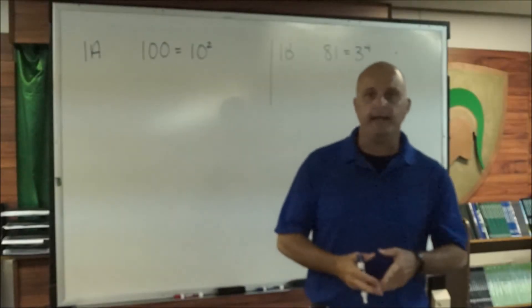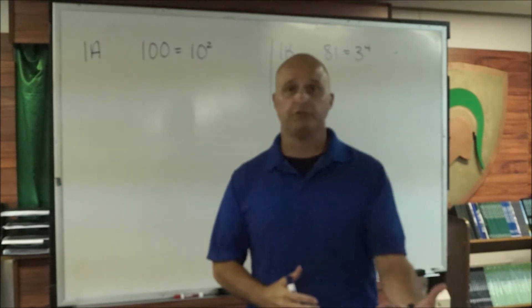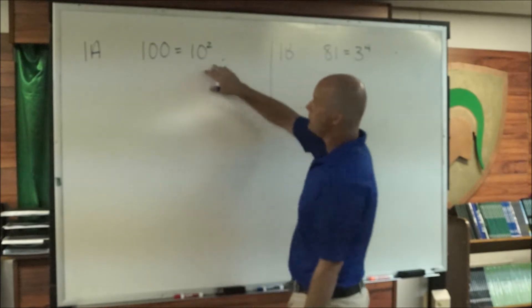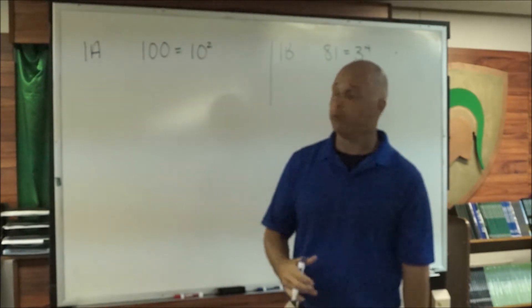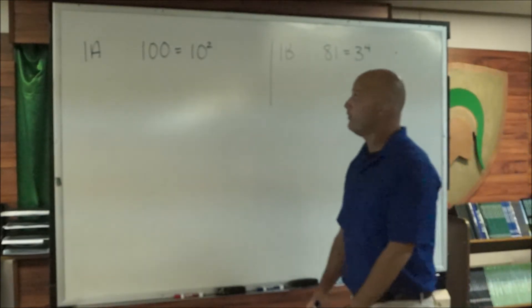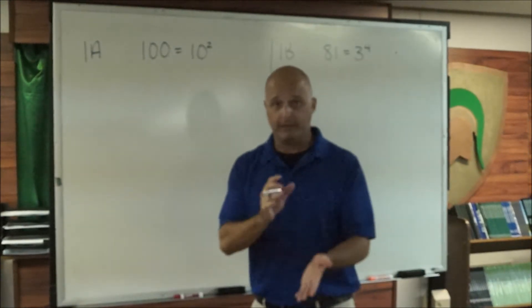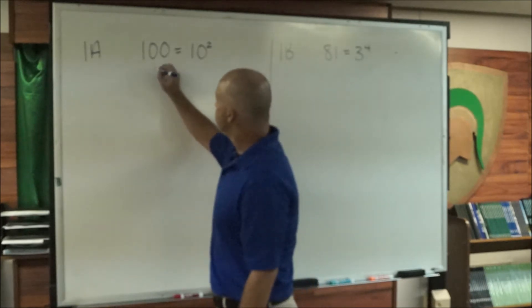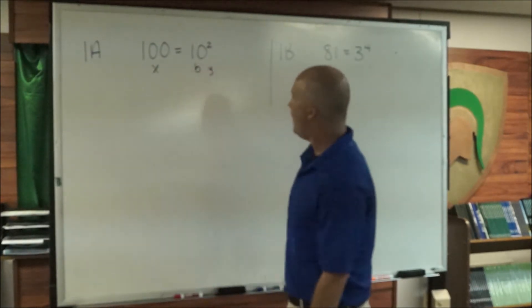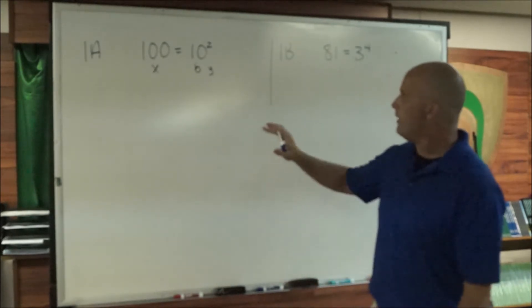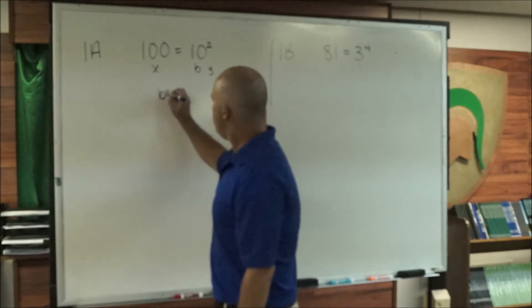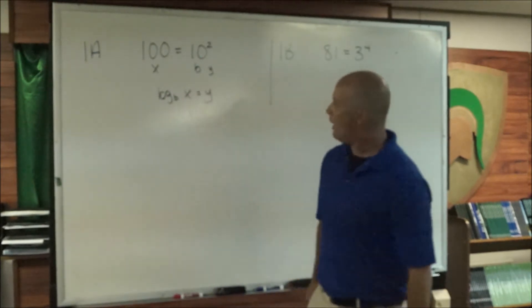In problems 1a and 1b, we're asked to take the exponential form and change it into logarithmic form. You can see these have already been solved because 10 squared is equal to 100, and 81 is equal to 3 to the 4th. What we want to do is identify what we have: this is going to be x, this is b, and this is y.